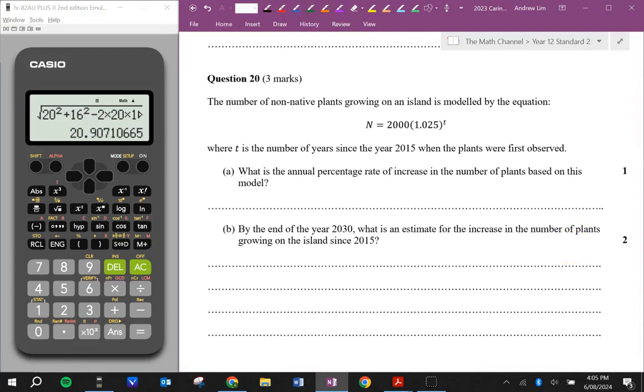The number of non-native plants growing on an island is modeled by the equation N is equal to 2,000 times 1.025 to power t. What is the annual percentage rate of increase in the number of plants based on this model? So we can see here, this 1.025, that's our growth. Which can actually be split into 1 plus 0.025. So really we want this as a percentage. So if we times that by 100, that will give us 2.5%.